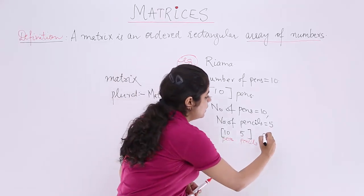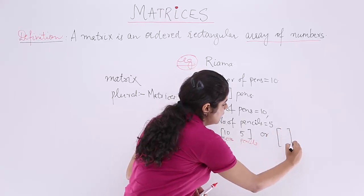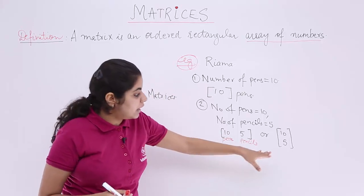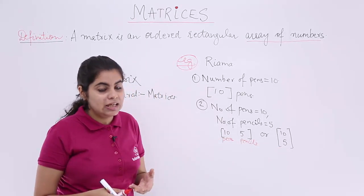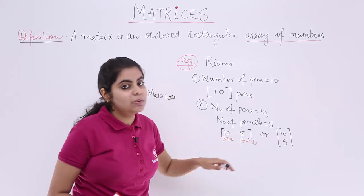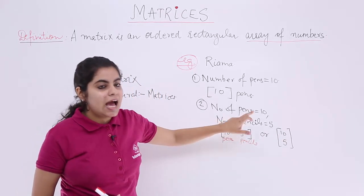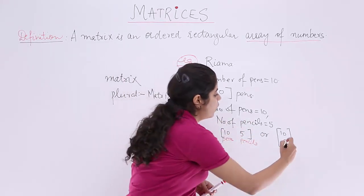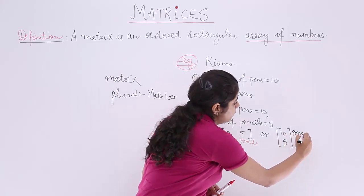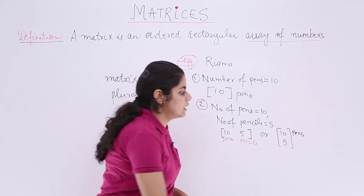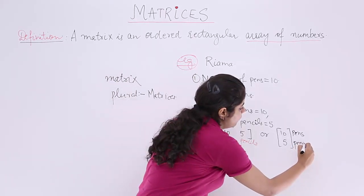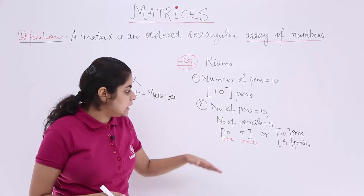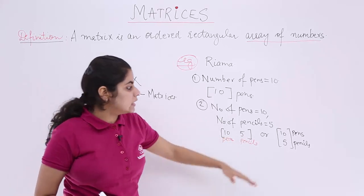But this matrix doesn't always have to be horizontal. I can also make the array with 10 written above and 5 written below — a vertical form. So 10 represents pens and 5 represents pencils. For two articles, I can represent them either in a horizontal form or in a vertical form.